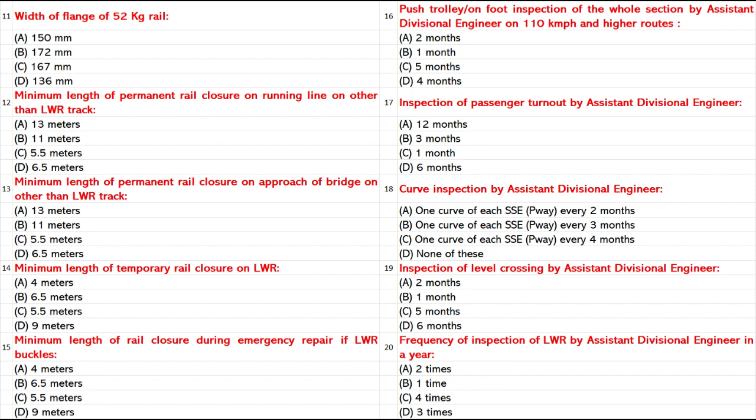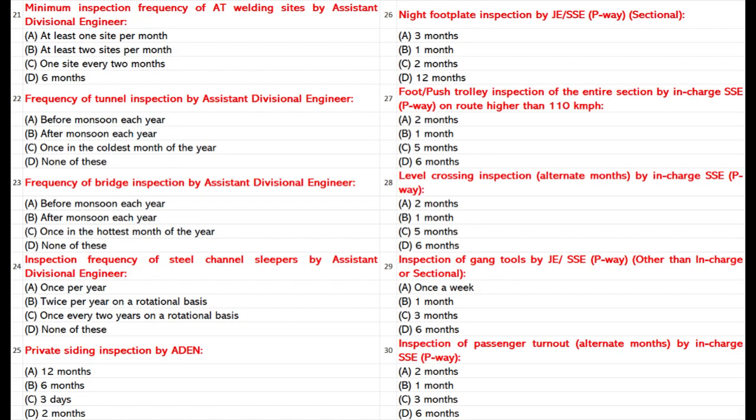Inspection of level crossing by Assistant Divisional Engineer: 2 months. Level crossing inspection by Divisional Engineer: A. At least 1 site per month. B. At least 2 sites per month. C. 1 site every 2 months. D. 6 months. Answer: A. At least 1 site per month.